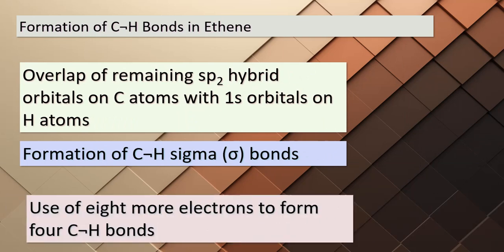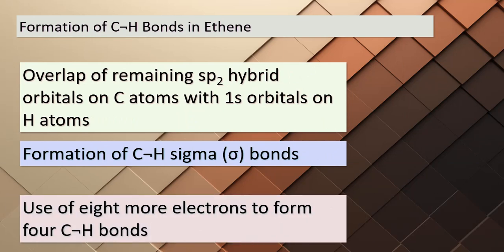Now that we've understood how the C–C sigma bond is formed, let's explore the next step: the creation of C–H bonds in ethene. The remaining sp² hybrid orbitals on the carbon atoms will overlap with the 1s orbitals on hydrogen atoms. This overlap gives birth to C–H sigma bonds. We employ a total of eight more electrons to establish these four C–H bonds. Out of the 12 valence electrons in the C₂H₄ molecule, a total of 10 electrons are engaged in crafting these sigma bonds.